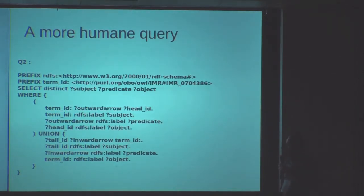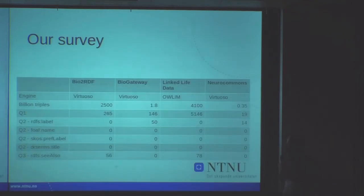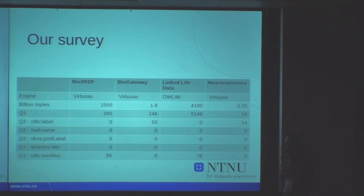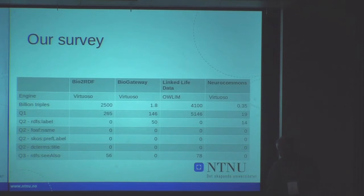We used this series of queries. This is a typical query in which we used the predicate RDFS label. In reality, we used all four types of predicates recommended by linked data: RDFS label, foaf name, SKOS preferred label, and DC terms title. Only RDFS label returned human-readable results, and only for two resources. The other three didn't return anything. Additionally, we noticed that the resources varied with respect to the use of the predicate RDFS-C also. All in all, it clearly indicated that the use of predicates varies a lot among these four triple stores.